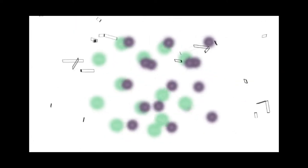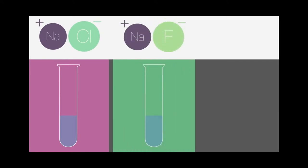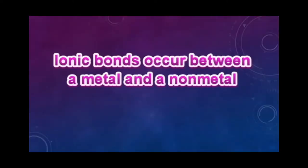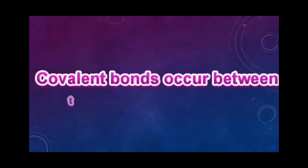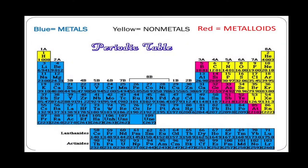To distinguish between the types of compounds, it is important to take note of the type of elements that are chemically combined. An ionic compound is formed from the combination of a metal and non-metal element. On the other hand, a covalent compound is formed from the combination of two non-metal elements, or a metalloid and a non-metal element. To determine whether an element is a metal, non-metal, or metalloid, you can refer to their location in the periodic table.